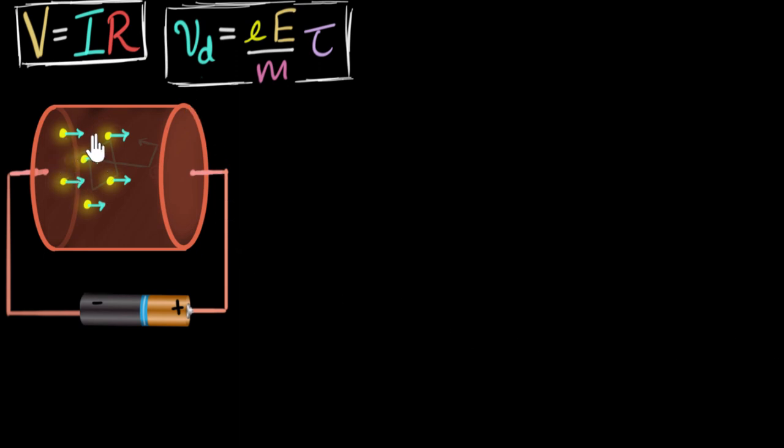Then we used this model to figure out what the electric current was in terms of drift velocity. We found that the electric current equals this number. This N represents the number of electrons per unit volume, the number density of the electrons. This over here tells you how many electrons are passing per second, the volume traveled per second, and this is the total electrons per second. You multiply it by the charge to give you total charge.